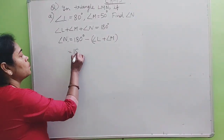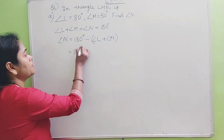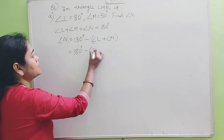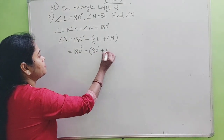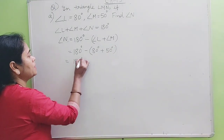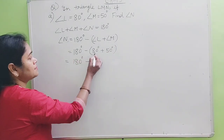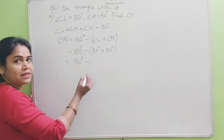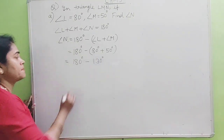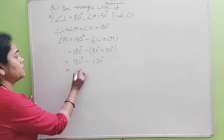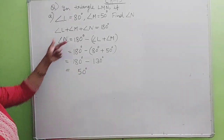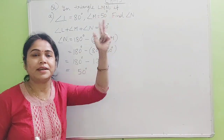Now write 180 degrees minus L which is 80 degrees and M which is 50 degrees. So 180 degrees minus 80 plus 50, that is 180 minus 130 degrees. This is equal to 50 degrees. So angle N is 50 degrees.